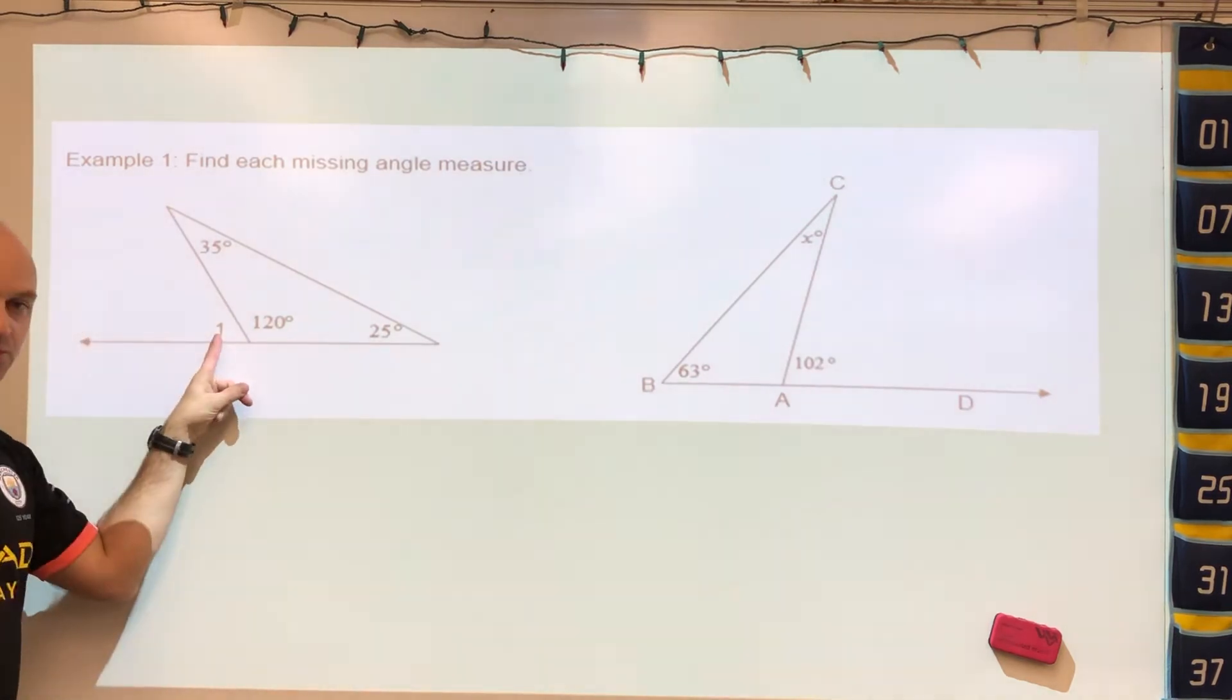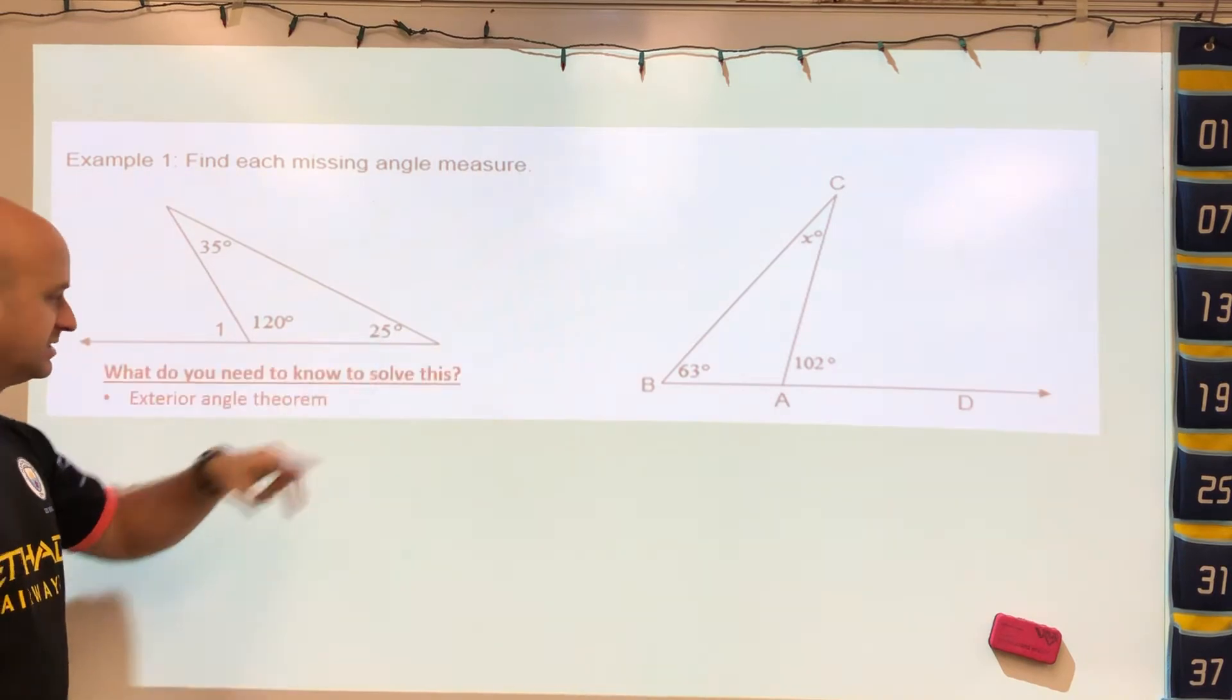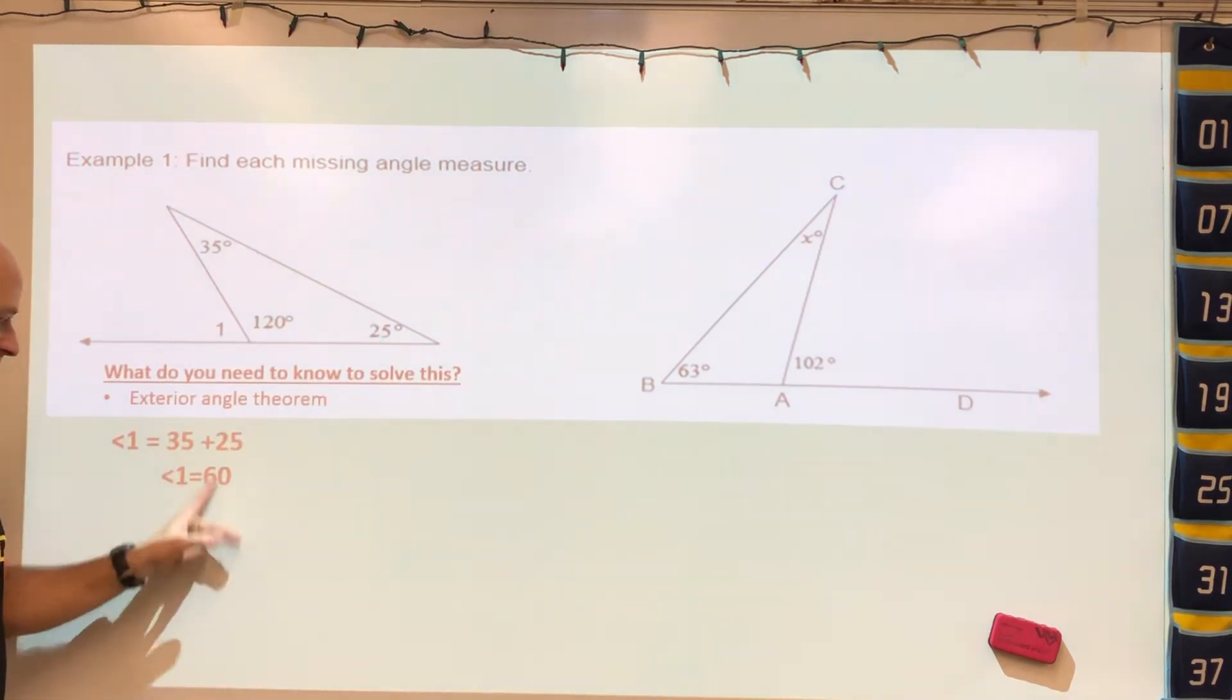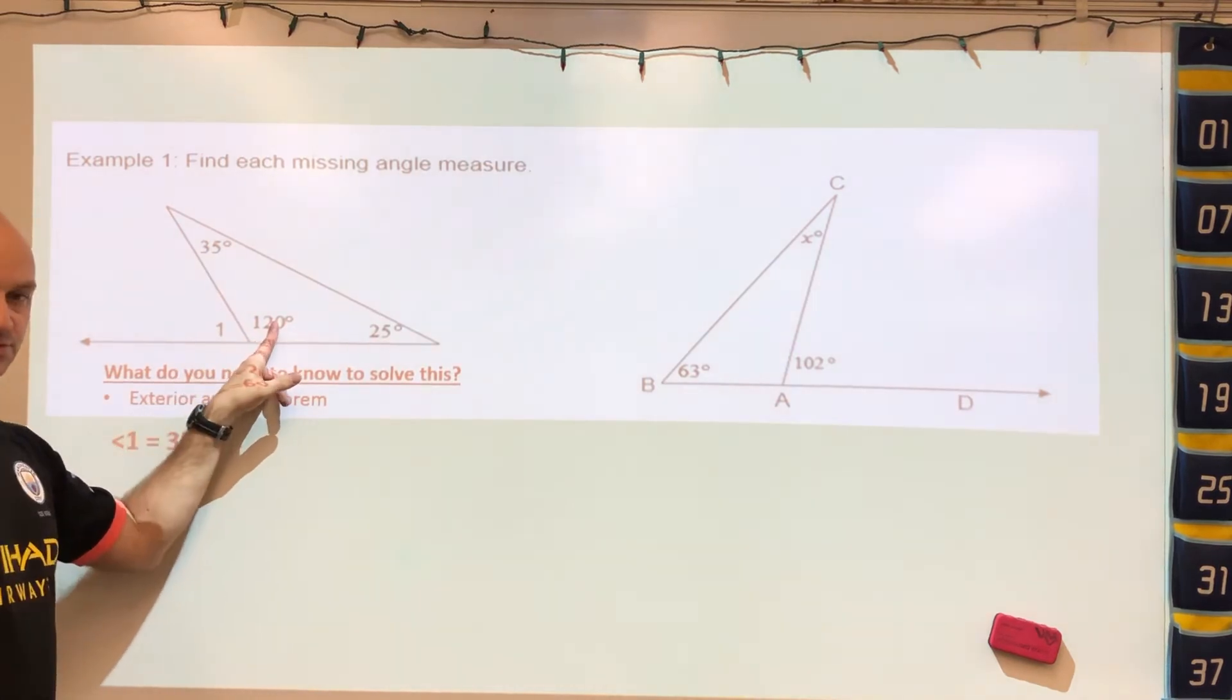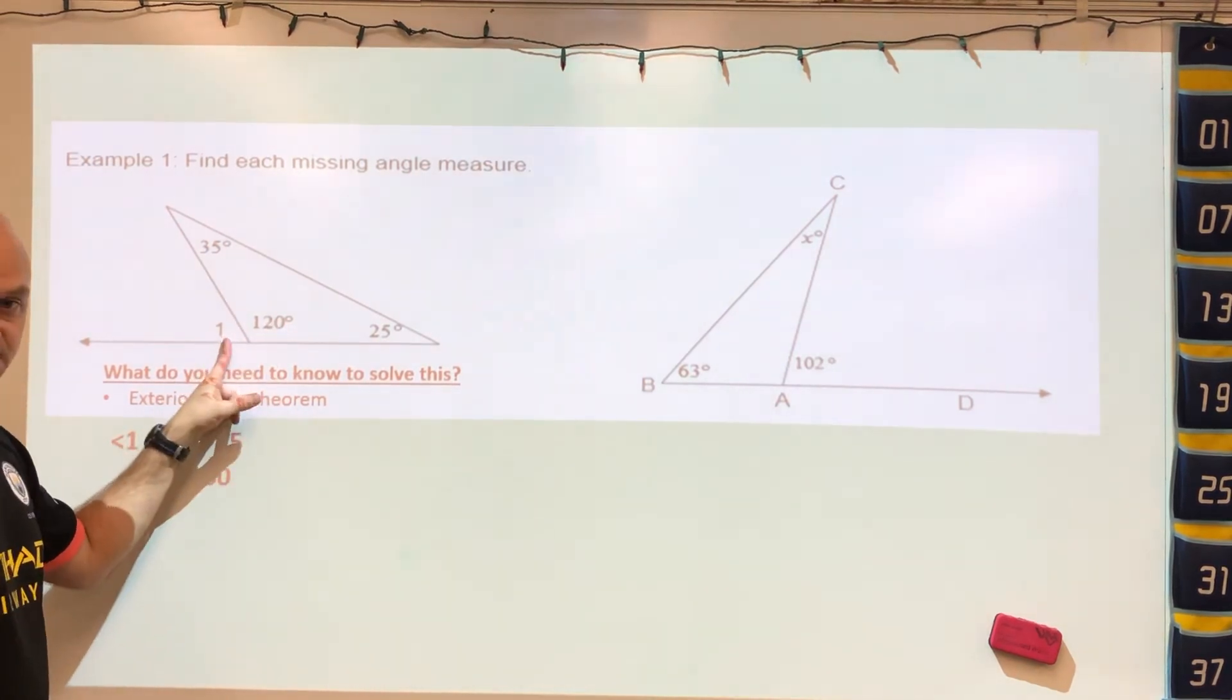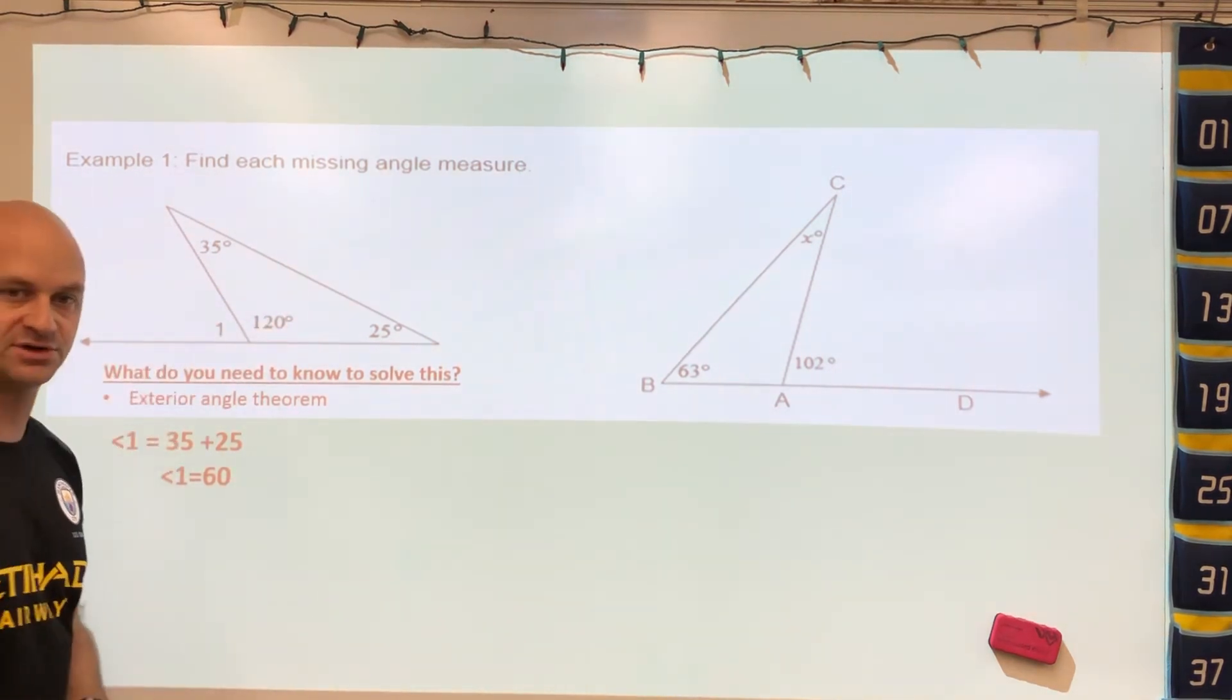Here's a simple example. Angle 1 is an exterior angle. We're going to add up these two values because they're the remote interior angles. When we do, we get an answer of 60. Some of you will say, okay if this is 120, these are linear pairs so that has to be 60, which is true. That way you can verify what you're doing is correct.